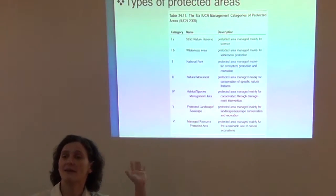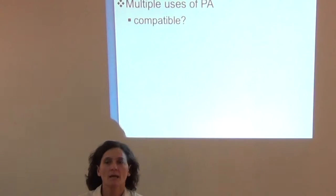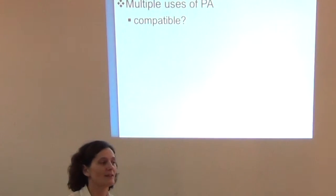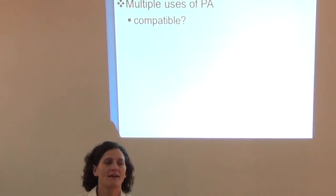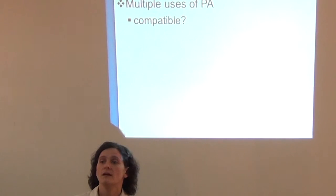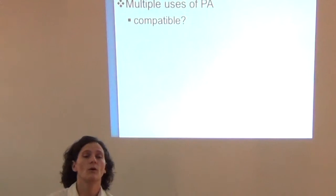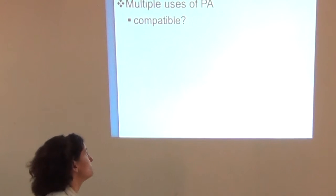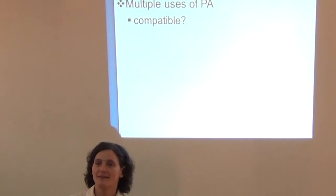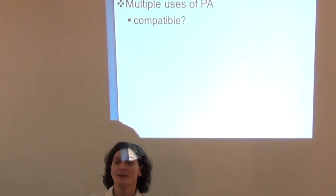Protected areas have multiple uses. I think one of the presenters showed a slide yesterday with people enjoying skiing at a national monument in the United States. So yes, protected areas do have multiple uses, and sometimes we ask: are they compatible? Can we use this national monument in the winter to ski and yet preserve a wild population of some large mammal? From my personal experience, when I came to the United States six months after starting my master's, I had the privilege to go to Yellowstone with my American friend, and I was completely blown away by the masses and masses of people.